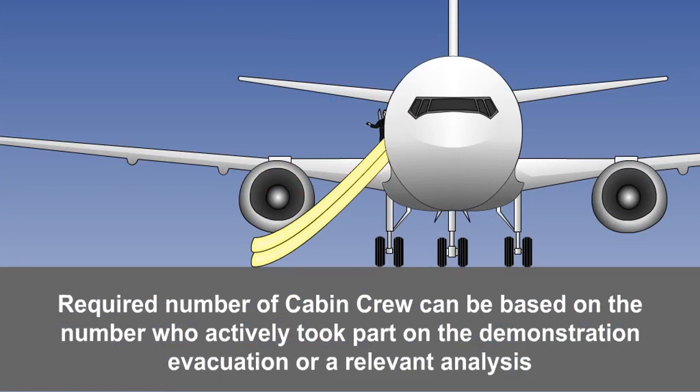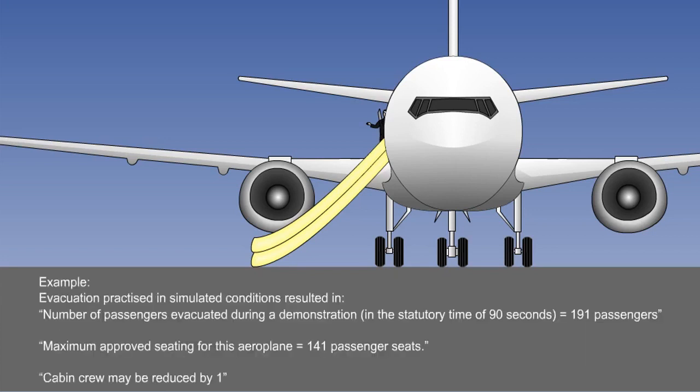Or the number of cabin crew who actively participated in the aeroplane cabin during the relevant emergency evacuation demonstration, or who were assumed to have taken part in the relevant analysis. Except that, if the maximum approved passenger seating configuration is less than the number evacuated during the demonstration by at least 50 seats,